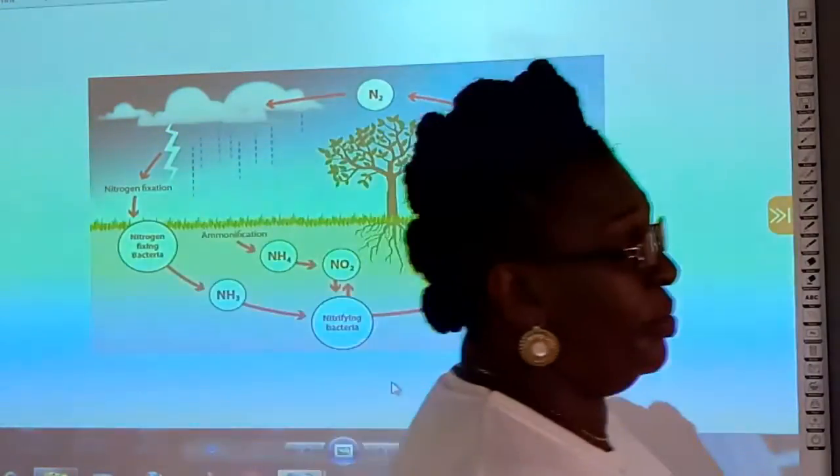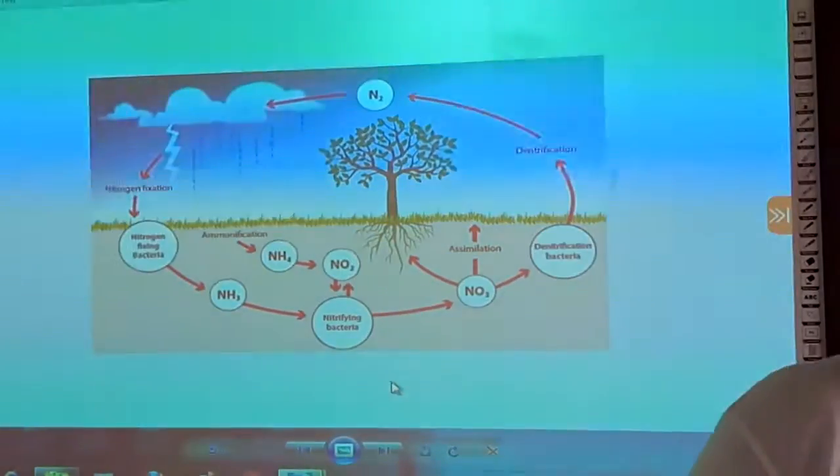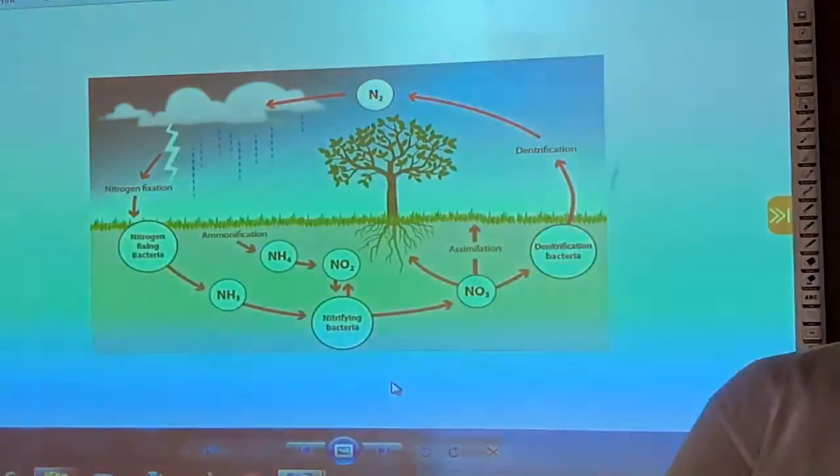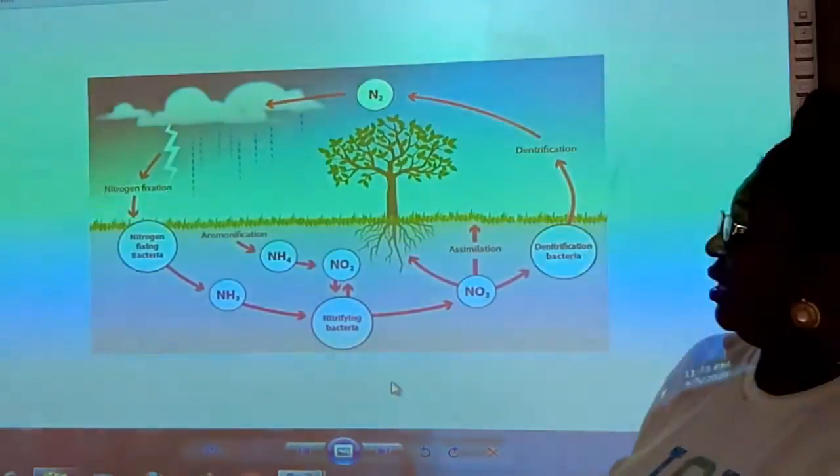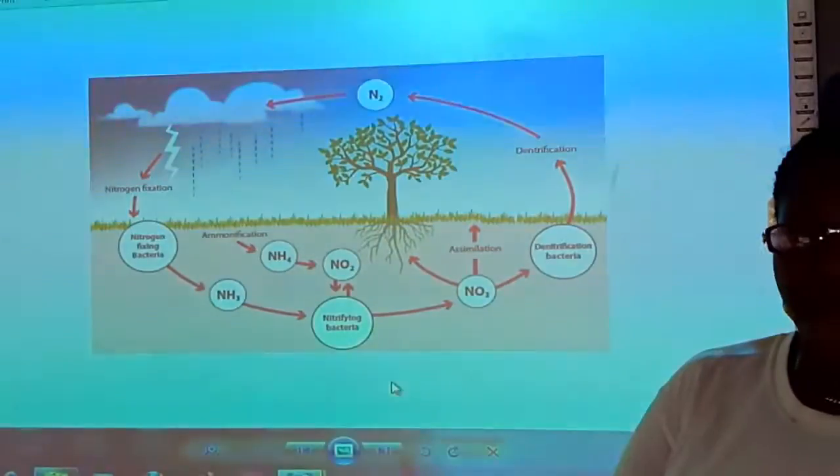Nitrogen cycle. Nitrogen is a major element for plants and we find it in various forms.